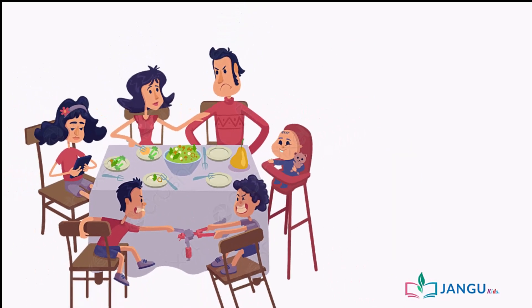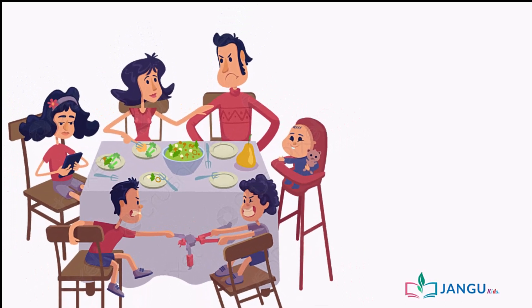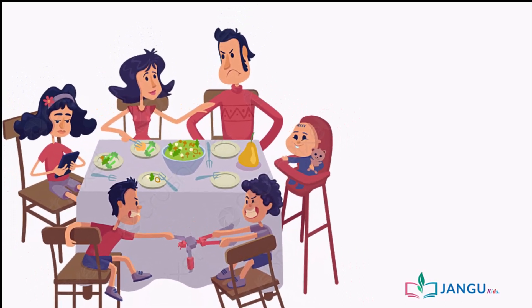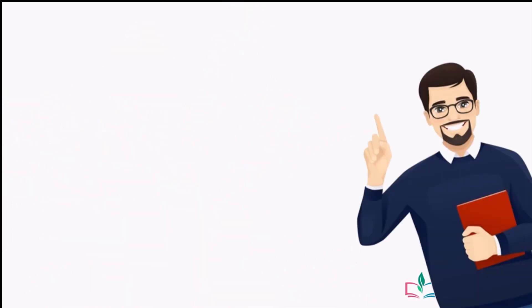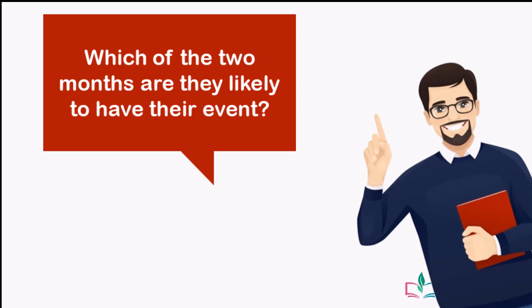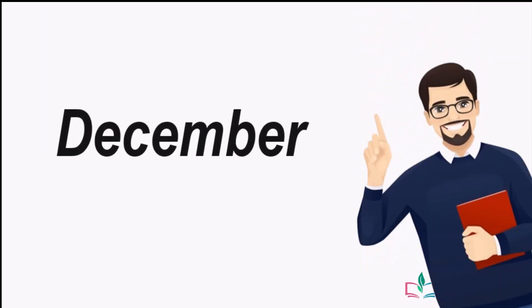These are the Ousmans. They live in Lagos state and are planning an outdoor party, either in April or December. They want to do it in a month with little rainfall. Which of the two months are they likely to have their event? That's right — December. This is because we know from experience that it is more likely to rain in April than in December in Lagos state.